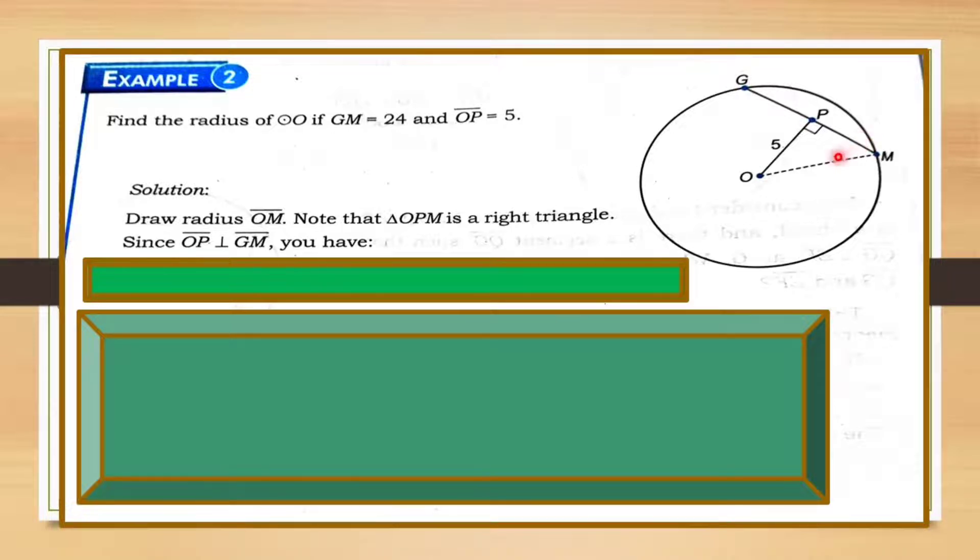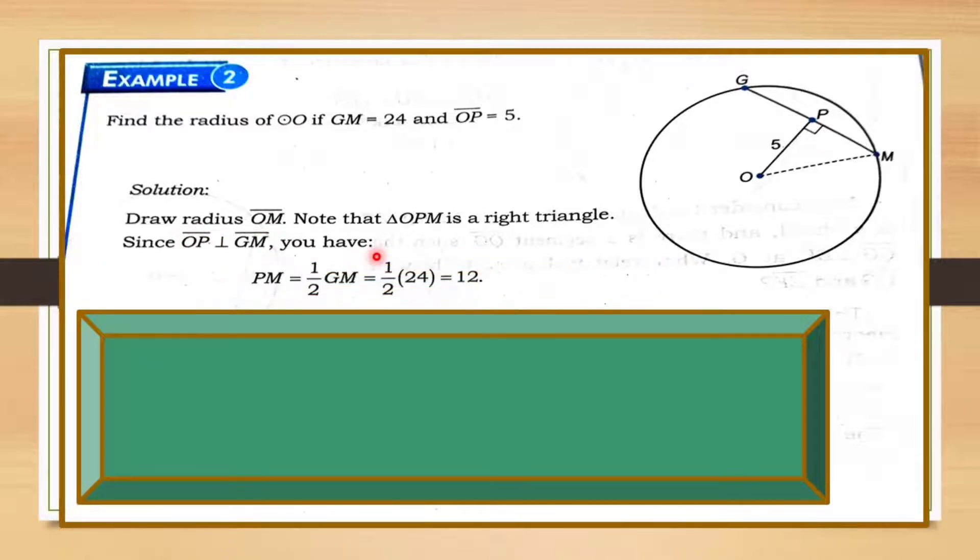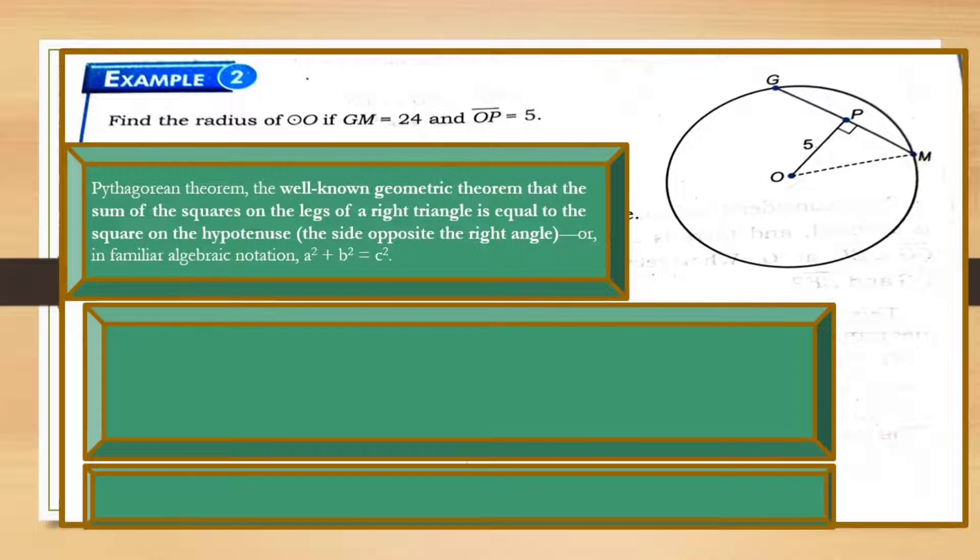Since OP, segment OP, is perpendicular to segment GM, we will have PM. PM is equal to one half of GM. The measure of PM is equal to half of GM. GM here is given as 24. And therefore, PM is equal to 12. But the radius is what we're finding. So, what's next?